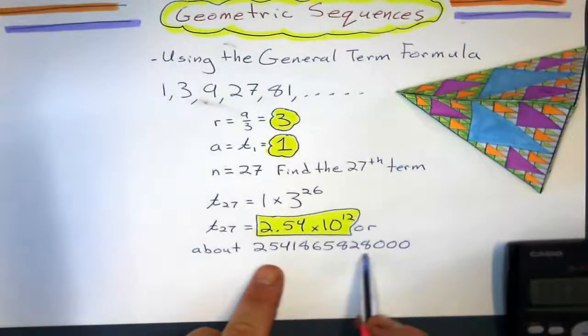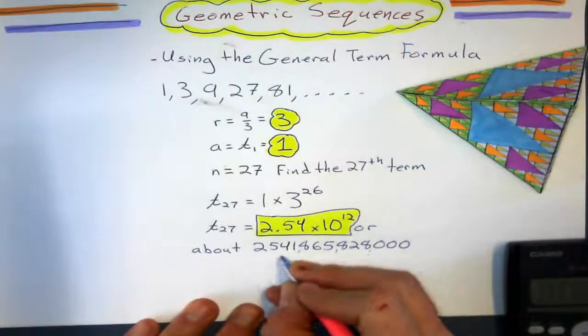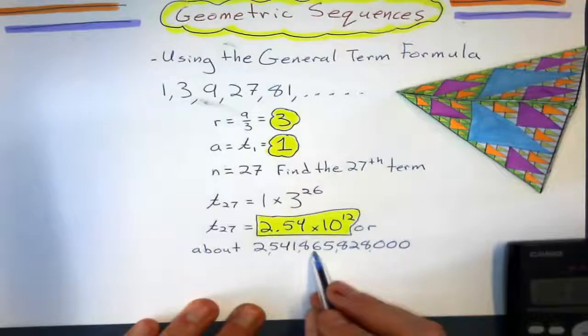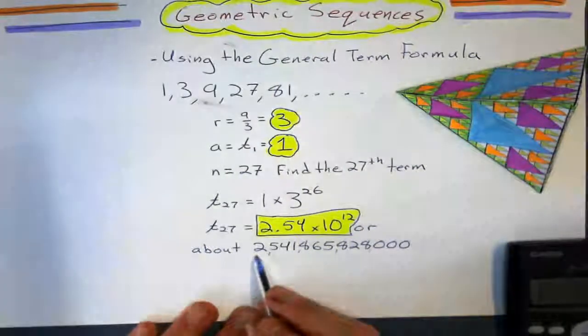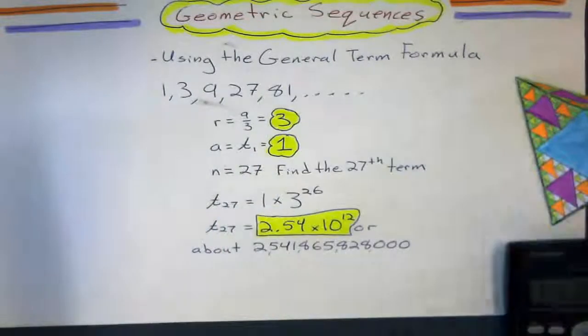So if I were to write this out, we'd get somewhere about, what would that be? That would be, there's the millions, billions, trillion, about two and a half trillion triangles if I took this to the 27th step. All right?